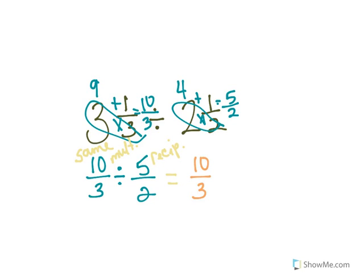Ten-thirds. The divide becomes multiply, and then I'm going to take the reciprocal of five-halves, which will be two-fifths.